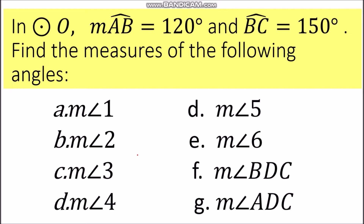In circle O, the measurement of arc AB is given, which is 120 degrees, and the measurement of arc BC is equal to 150 degrees. Find the measures of the following angles: angle 1, angle 2, angle 3, angle 4, angle 5, angle 6, angle BDC, and angle ADC.